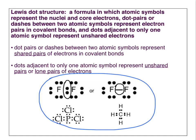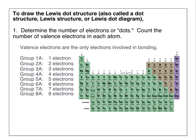Unshared pairs of electrons, or lone pairs, are always written as pairs of dots. Now let's discuss the rules for drawing a Lewis dot structure. Lewis dot structures are also called dot structures, Lewis structures, or Lewis dot diagrams.